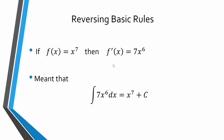Here's what I mean by reversing our basic rules. If you recall, if you take f of x equals x to the seventh power, then the derivative of f of x would be 7x to the sixth. Our basic derivative rule said take the exponent out front and then lower the exponent by one. That translates to finding an antiderivative of 7x to the sixth: raise the power by one to get x to the seventh, then divide by that new power — 7 over 7 is 1.